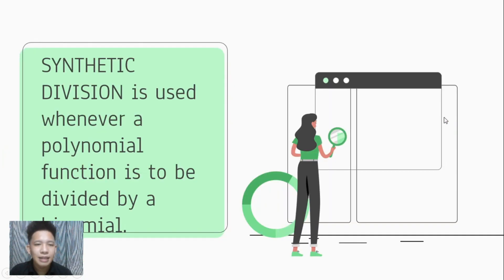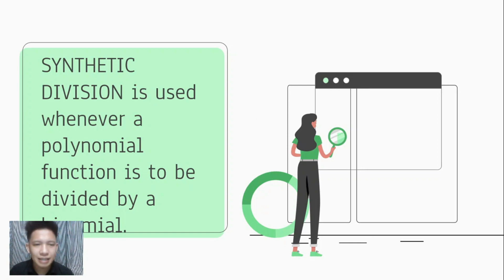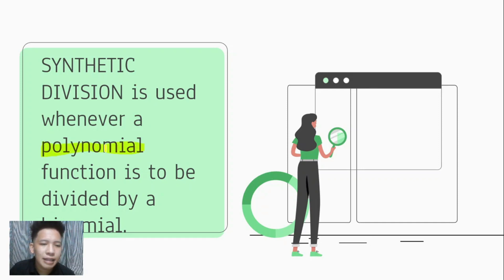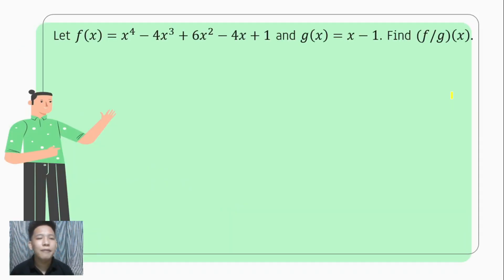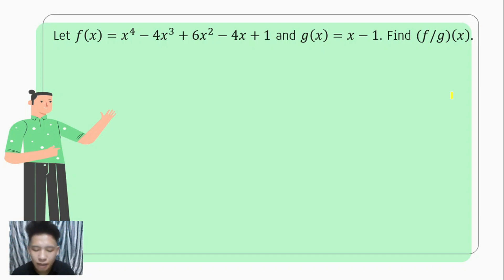It would be too tiresome to divide functions the way we did if we are dividing a polynomial function by a binomial. A technique called synthetic division is used whenever a polynomial function is to be divided by a binomial. Suppose f of x equals x to the fourth minus 4x cubed plus 6x squared minus 4x plus 1, and g of x equals x minus 1, and we are to look for f over g of x.